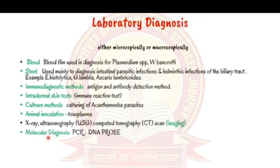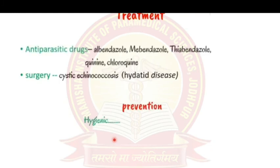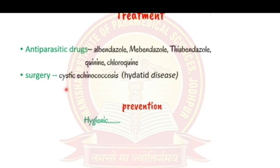Advanced molecular diagnostic techniques such as PCR and DNA probes can identify parasites but are very costly. Treatment of parasitic infections involves anti-parasitic drugs such as albendazole, mebendazole, thiabendazole, quinine, and chloroquine. Surgery may be required in cystic echinococcosis (hydatid disease) to remove cysts from the liver.